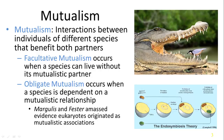Margulis and Fester also put together evidence that eukaryotes — the origin of eukaryotes — occurred through a mutualistic relationship between a small prokaryote and a larger prokaryote. And that's called the endosymbiosis theory.